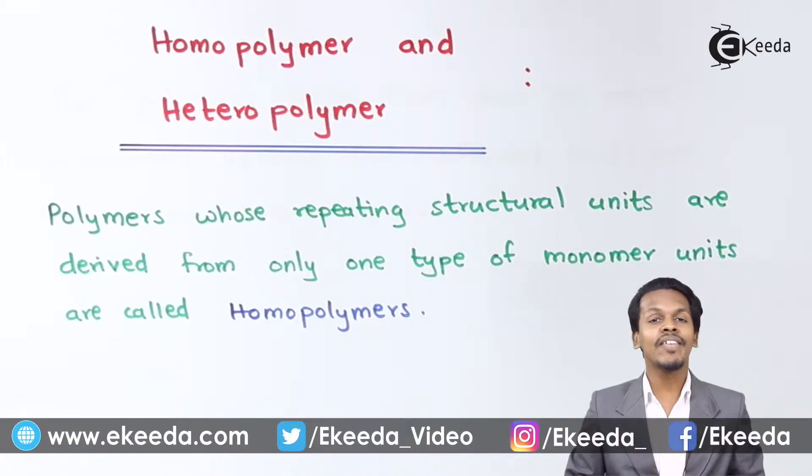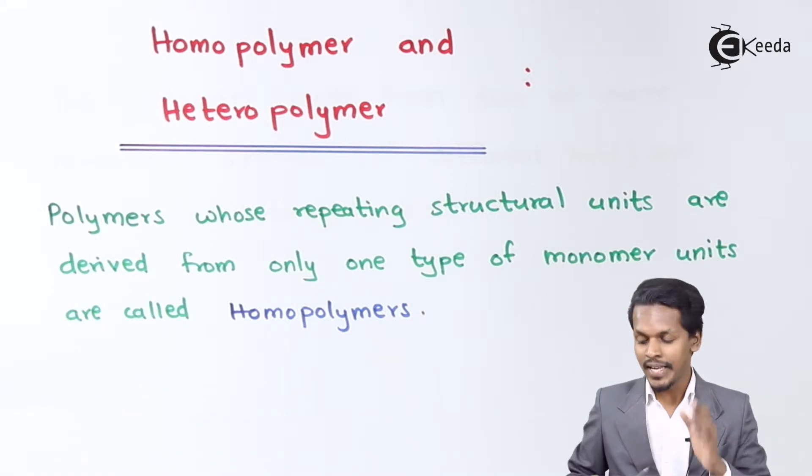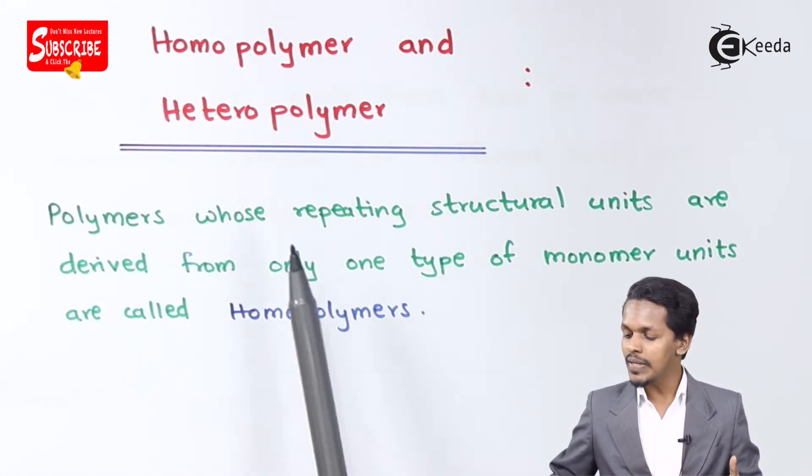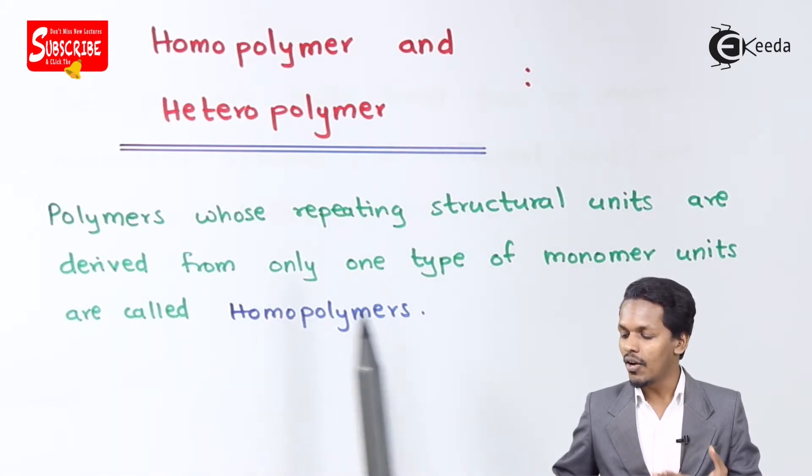So friends, now in this topic we're going to talk about homopolymers as well as heteropolymers. We have to understand the definition. The definition of homopolymer is: polymers whose repeating structural units are derived from only one type of monomer are known as homopolymers.